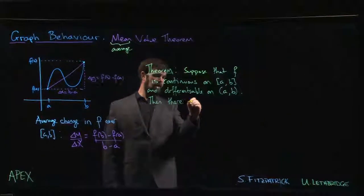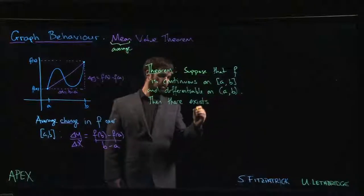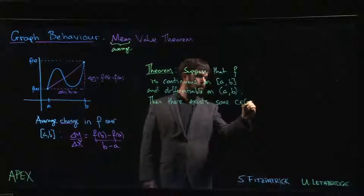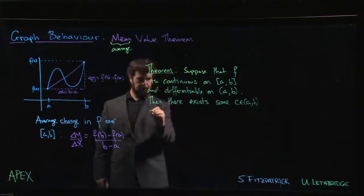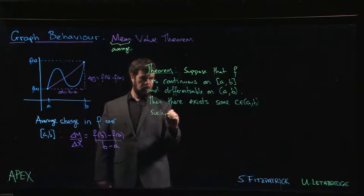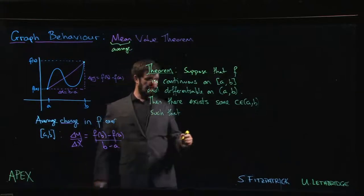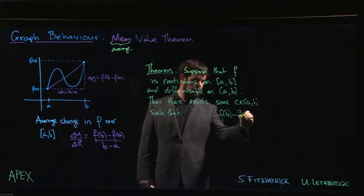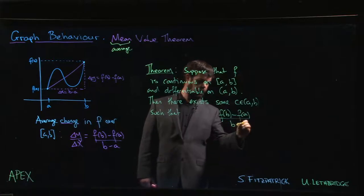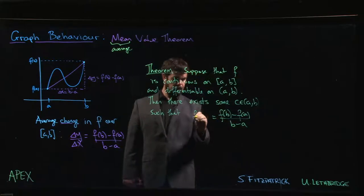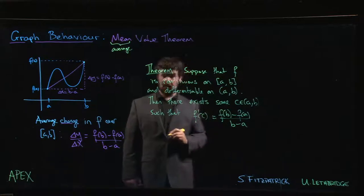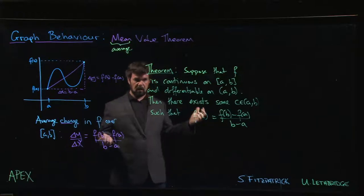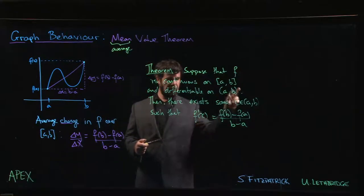We are guaranteed the existence of some number c between a and b such that this average rate of change, f(b) - f(a) over b - a, is equal to the instantaneous rate of change at that point. So there has to be at least one point between a and b where f'(c), the instantaneous rate of change, is equal to the average rate of change.